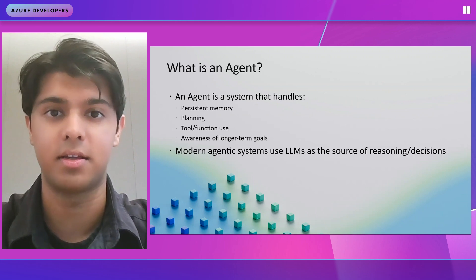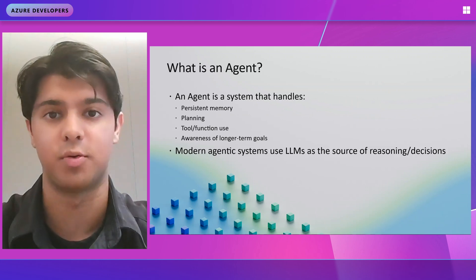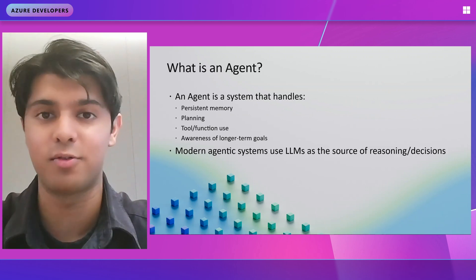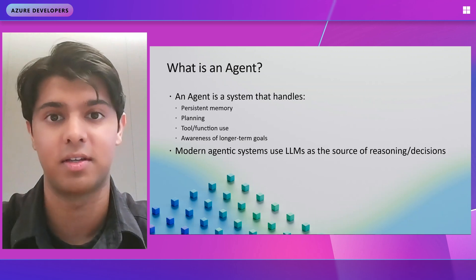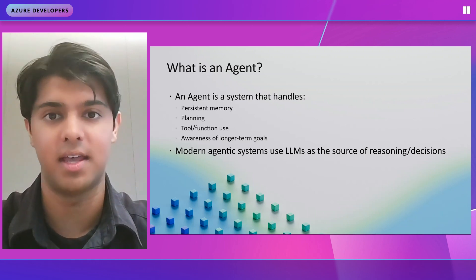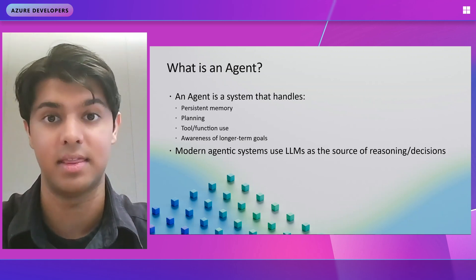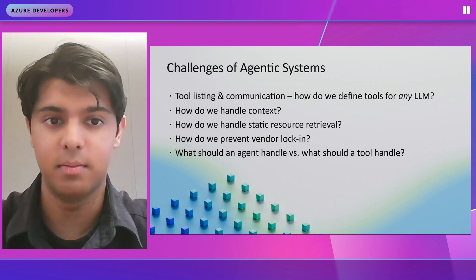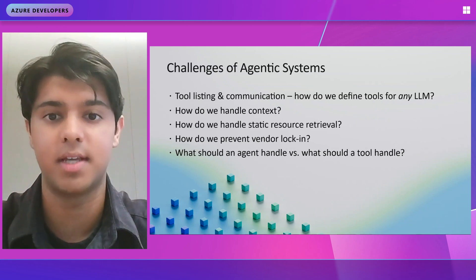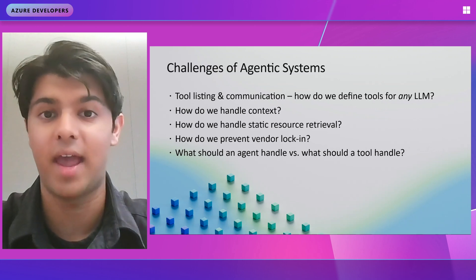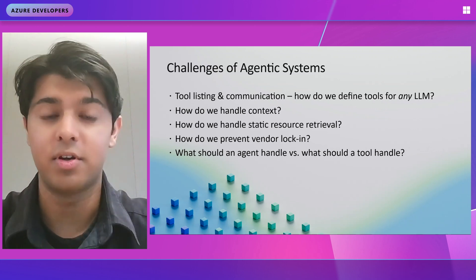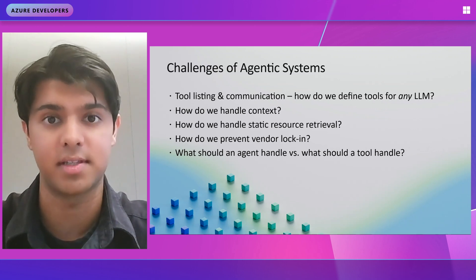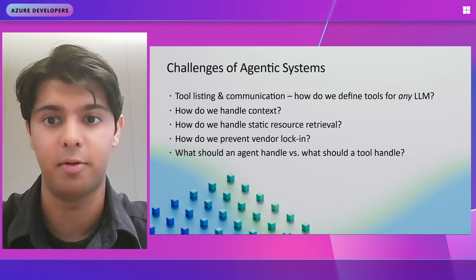Modern agentic systems use LLMs as the source of reasoning or decisions using features like tool calling or function calling. The LLM provides a decision layer for what happens in the agent afterwards. So let's go into some challenges of agentic systems. First, let's talk about tool listing and communication — how do we define tools for any LLM? Certain model providers such as OpenAI have opinionated schemas on what function calling looks like, and those differ from model to model.